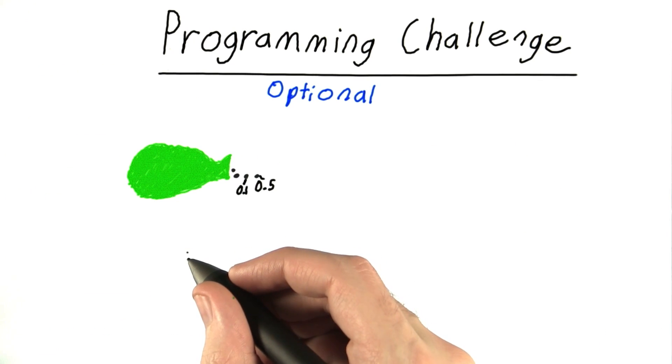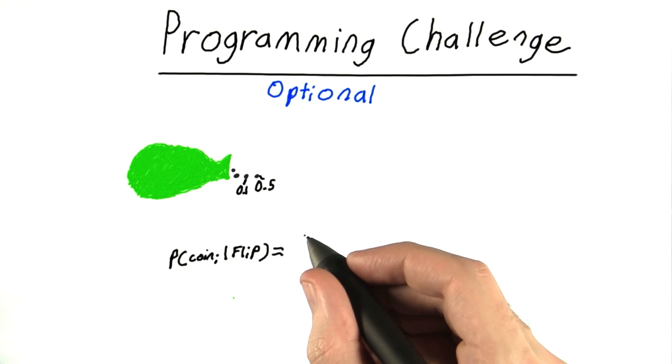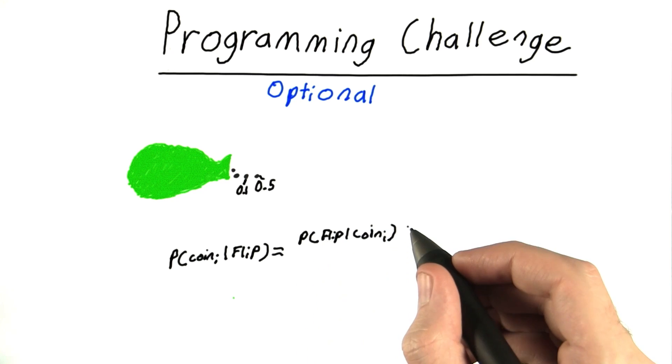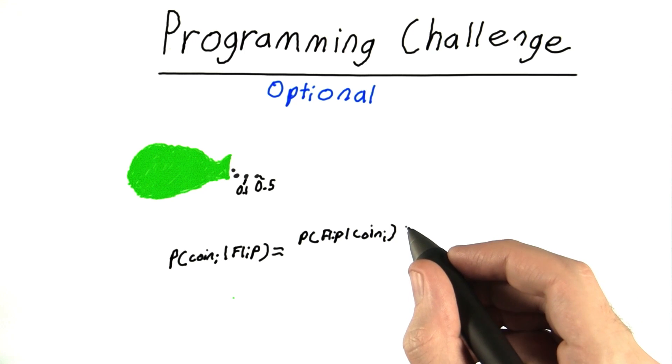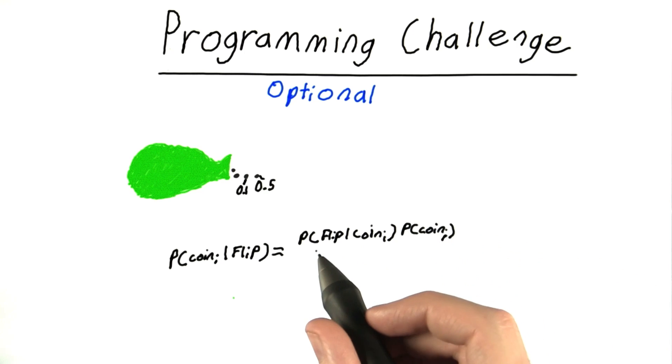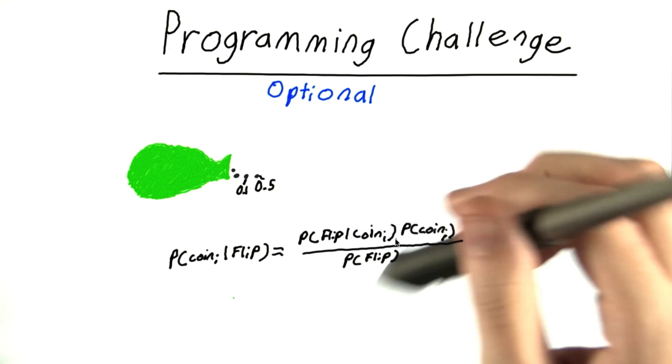So to solve this, remember that Bayes' rule tells us that the probability of the coin selected being a given coin is equal to the probability of the flip being what it was, that it's heads or tails given coin i, times the probability of coin i being the coin divided by the probability of the flip, either heads or tails.